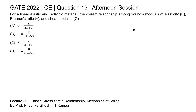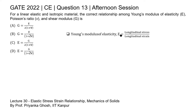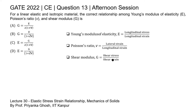Young's modulus of elasticity is the ratio of longitudinal stress to longitudinal strain, whereas Poisson's ratio is the ratio of lateral strain to longitudinal strain, and shear modulus is defined as the ratio of shear stress to shear strain.